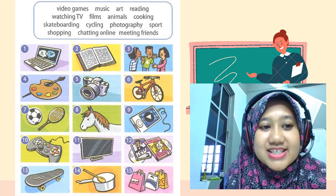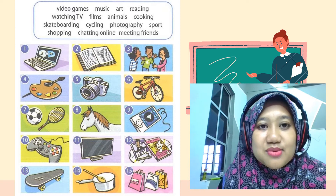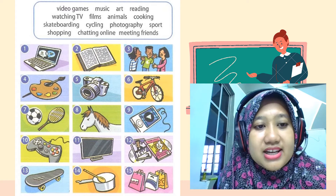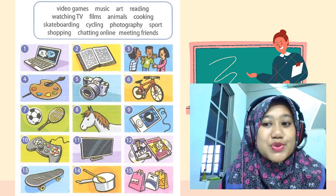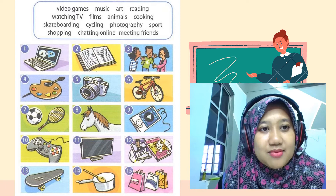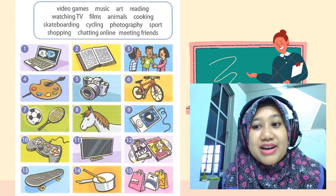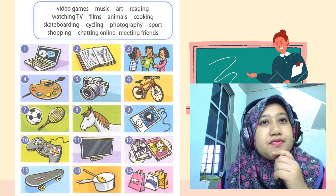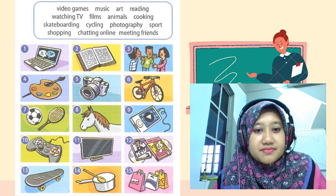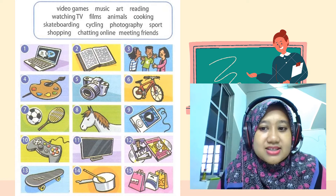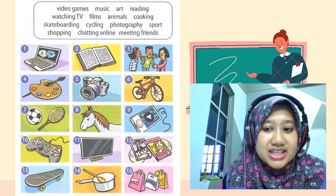Number four is related to art — you can see the paint and the paintbrush. How about reading? Number two is reading. Watching TV — number 11 is the television. And then films. Films are just like movies. Number 12 — we have a CD here. Nowadays we don't actually use CDs, but it's related to films.